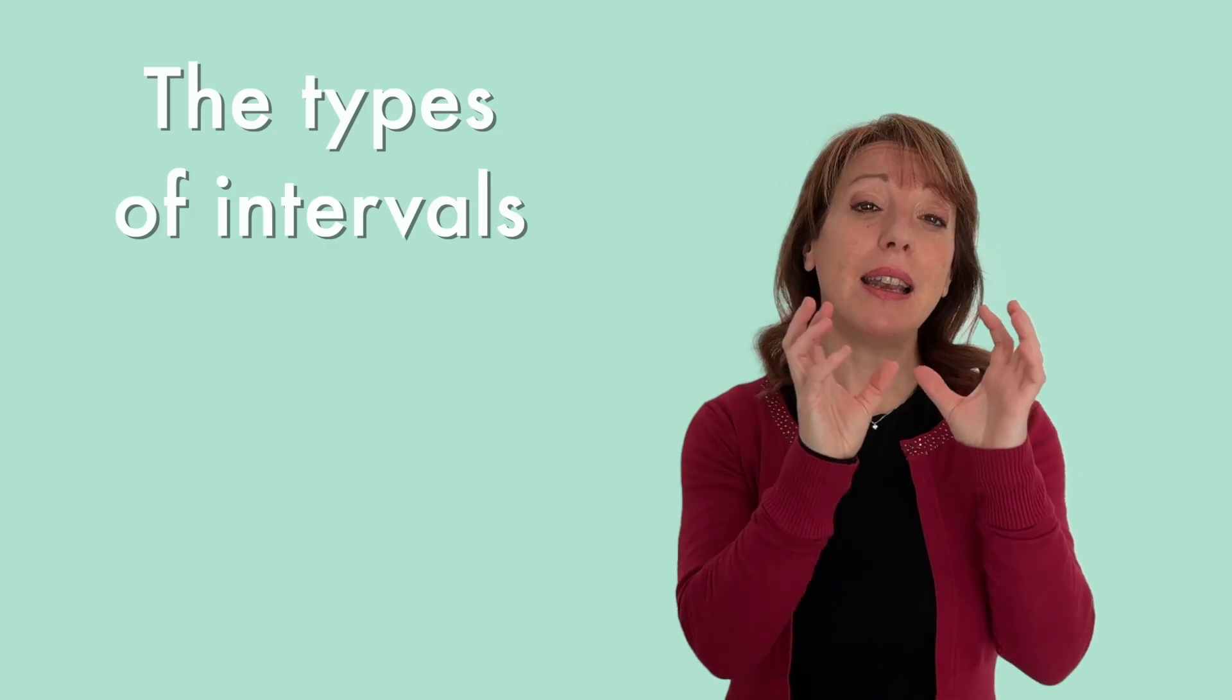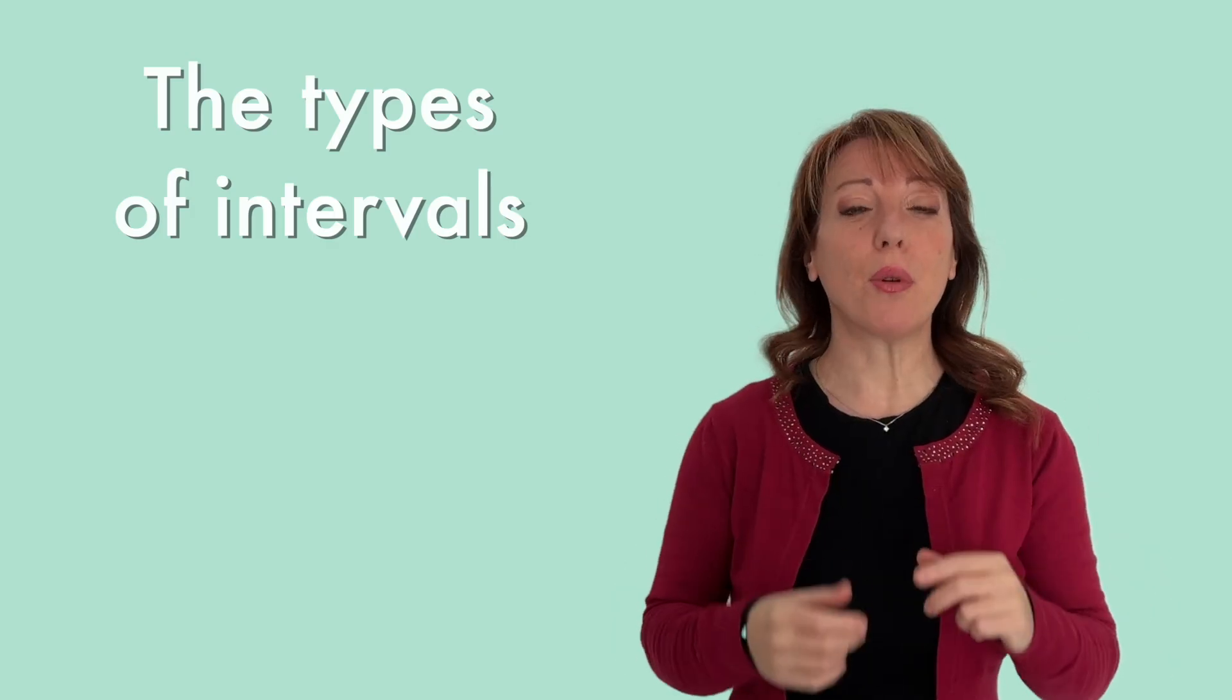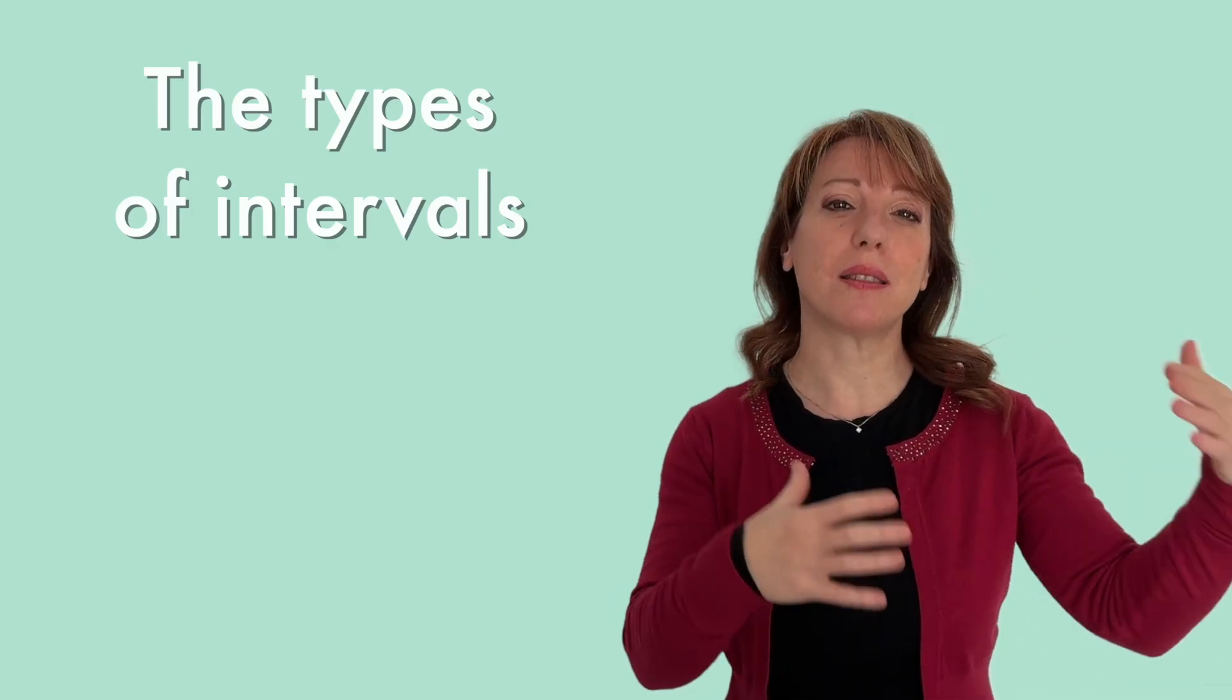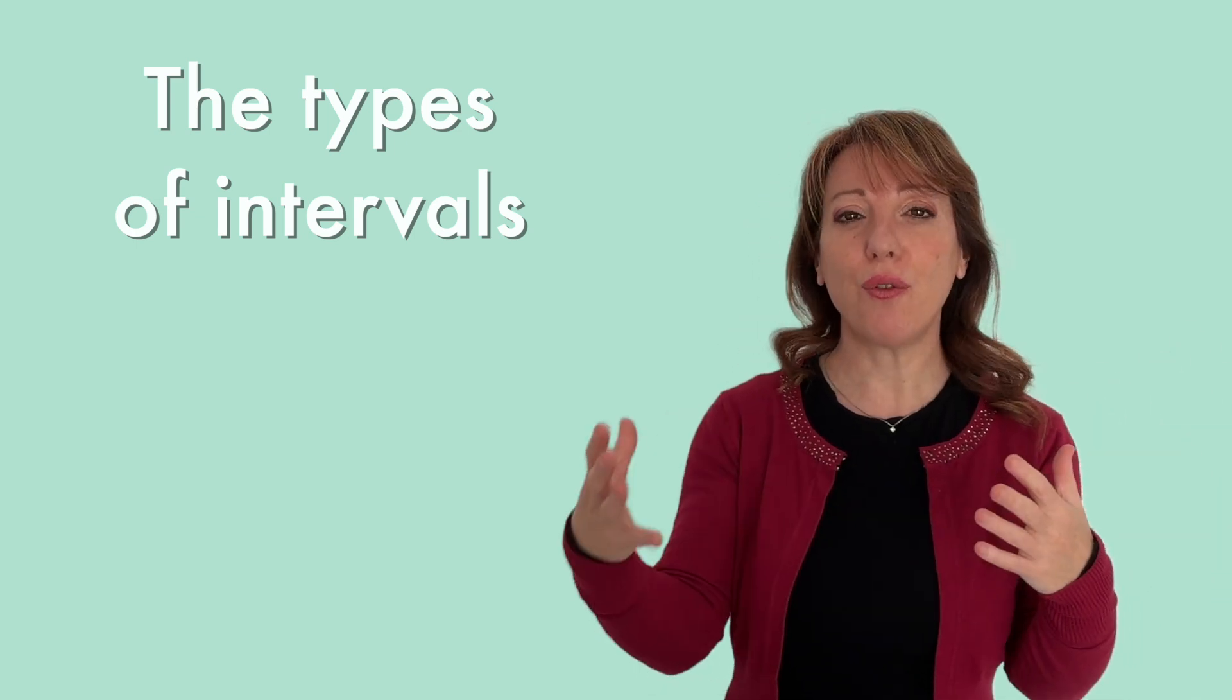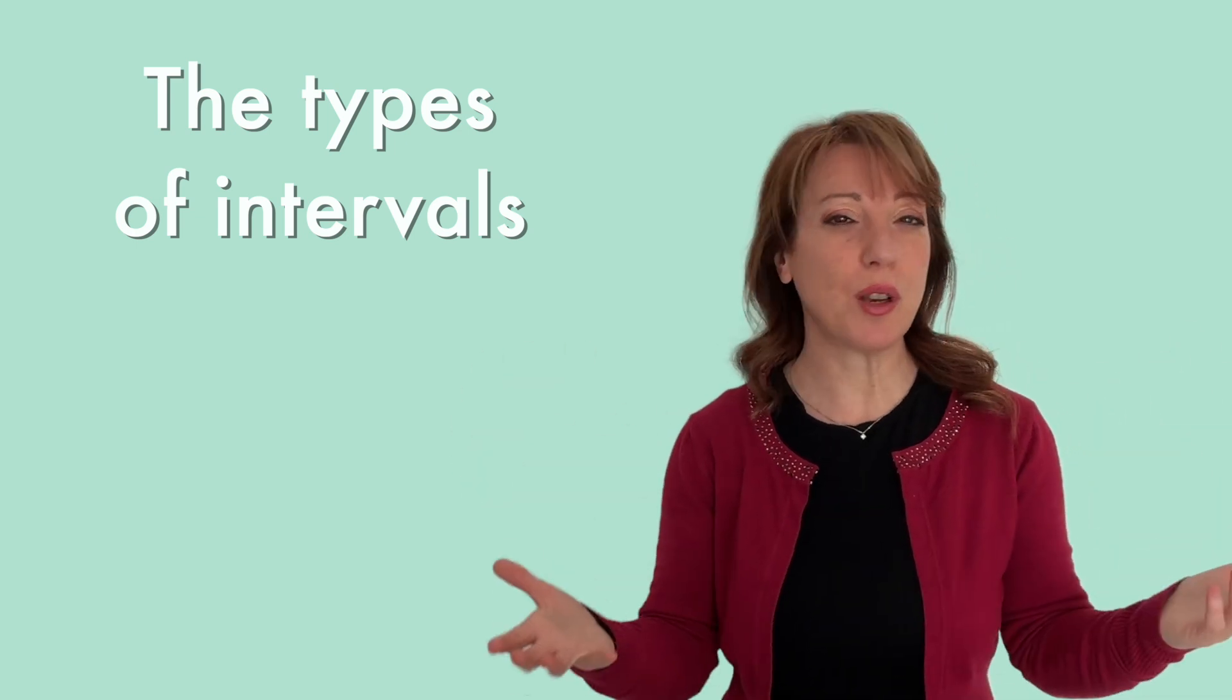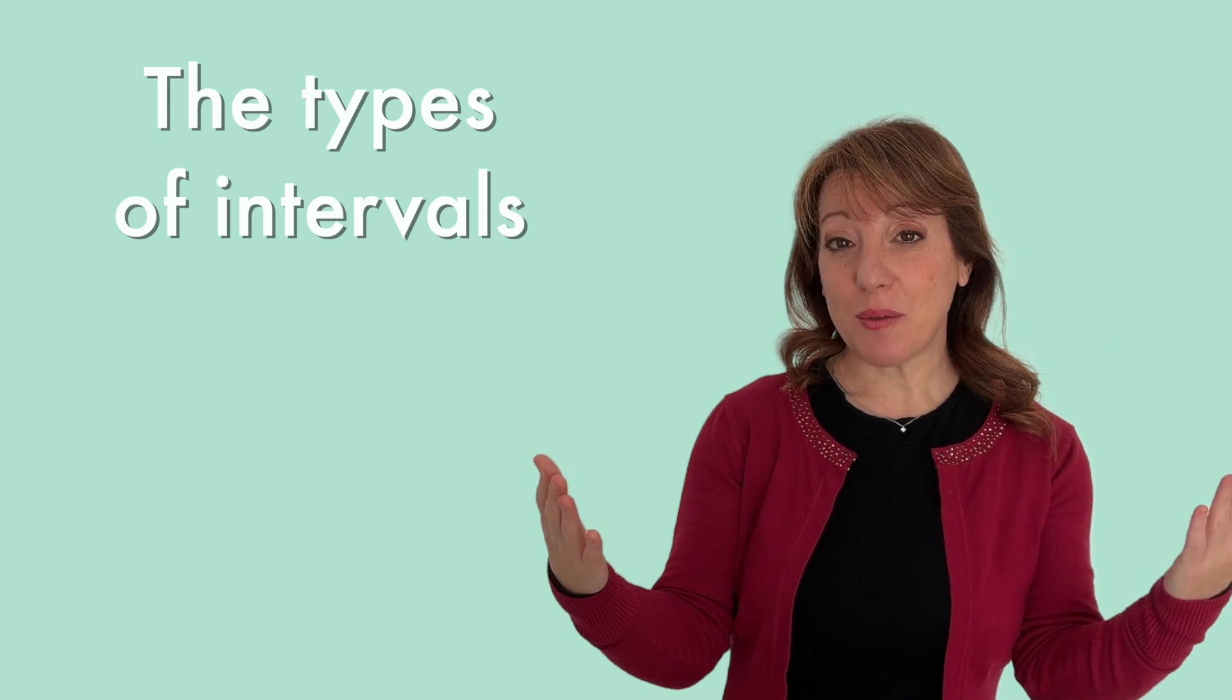So this is a third. Now, what type of third is this? The types are linked to the number. So for example, a second can only be of a certain type and the fourth of another type. How do we know this? We need to remember it. There are two types of intervals, major and perfect.